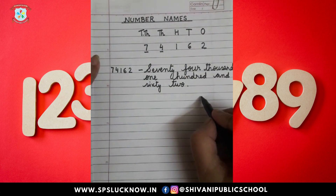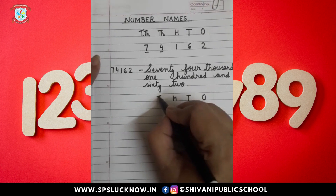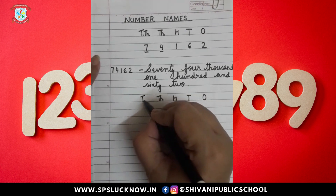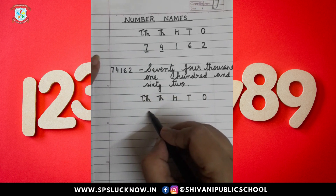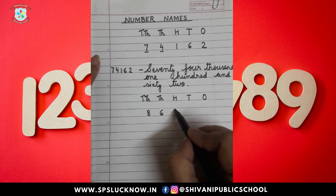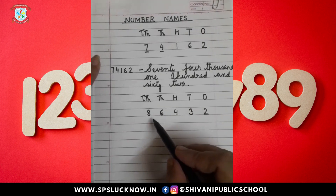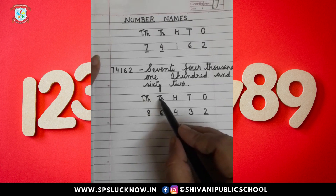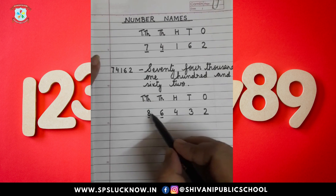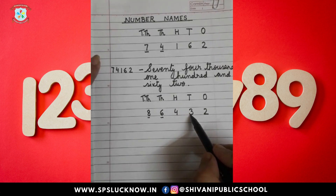One more number I am doing. First we will write the places: ones, tens, hundred, thousand, and ten thousand. Now the digits I am writing are: 8, 6, 4, 3, 2. We will read the numbers. Eight and six are under the thousand place, so we will read these numbers in a group — that is 86,000, four hundred and thirty-two.